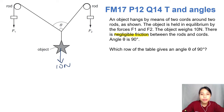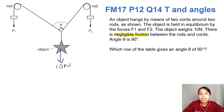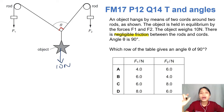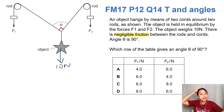Negligible friction between the rod and the cord. The angle is 90 degrees — so the angle is between this cord and this one here. Which row of the table gives an angle of 90? They give us a bunch of values for F. What is F? F, in this case, is that force there.